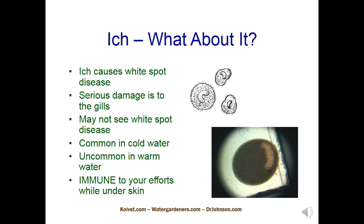White spot disease depends on stress and cooler water. Ich has a hard time living at 78 degrees. The reason warm water tends to wear out ich is its two-part life cycle: one stage is buried under the skin on the fish, and then a packet of baby ich goes to the bottom of the tank or pond. There's one critical phase in the middle where the packet on the bottom bursts open and organisms called swarmers come out.